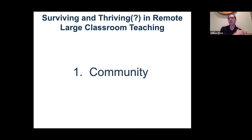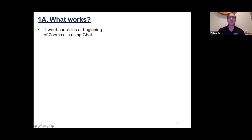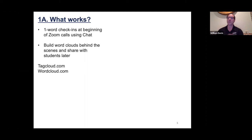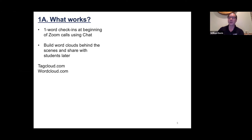Let me talk about community and how I've tried to build it. One thing that works is using one-word check-ins at the beginning of Zoom via the chat box — it just grounds us and brings us into the space together. I tell students to keep it PG-rated. I then follow up by creating a word cloud from their responses, which I bring back the next day to validate and acknowledge what's happening for them in real time.